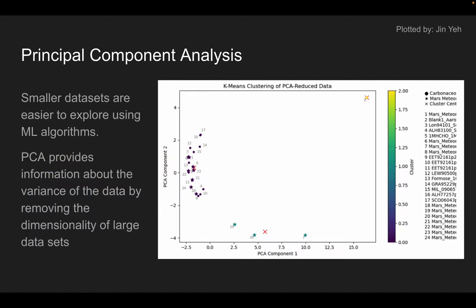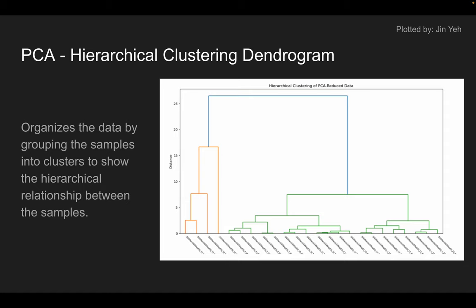To assess relationships between the samples, we use Principal Component Analysis, or PCA, which simplifies the dataset while retaining vital information. The PCA plot shows correlations between sample groups and hierarchical clustering dendrograms further organize the data into clusters, making it easier to interpret similarities among the samples.